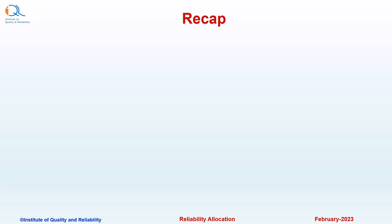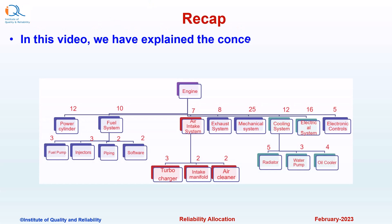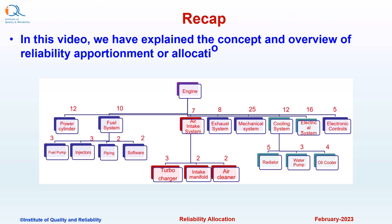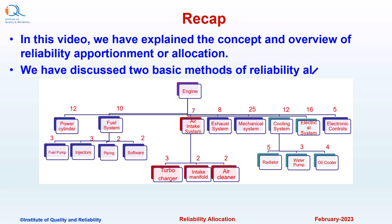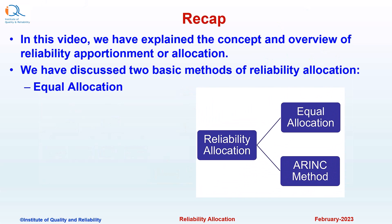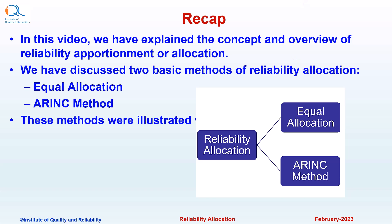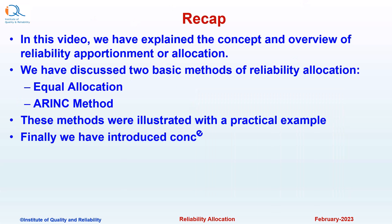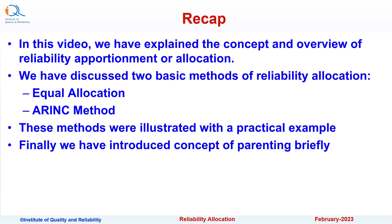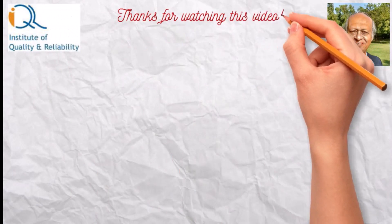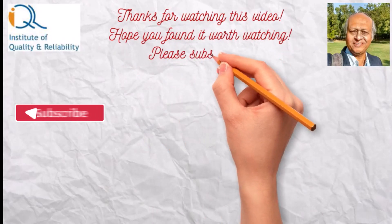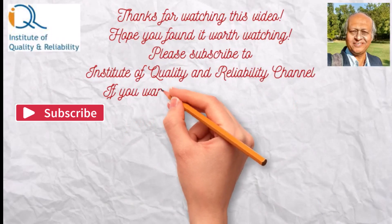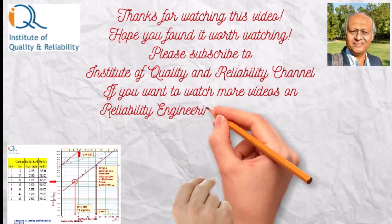Let us do a quick recap of this video. We have explained the concept and overview of reliability apportionment or reliability allocation. We discussed two basic methods: equal allocation and the ARINC method, illustrated with a practical example. We also introduced and discussed the concept of parenting. Thanks for watching. Please subscribe to the Institute of Quality and Reliability channel for more videos on reliability engineering, Six Sigma, and quality engineering.